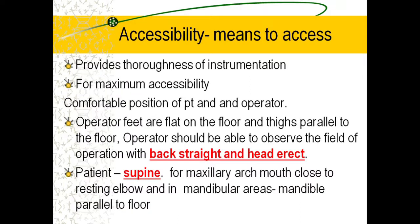First, accessibility means to access the area. It provides thoroughness of instrumentation. For maximum accessibility, a comfortable position of both patient and operator should be maintained. Operator feet should be flat on the floor, thighs parallel to the floor, and the operator should be able to observe the field of operation with back straight and head erect. Patient position should be supine for the maxillary arch, mouth close to the resting elbow, and in the mandibular area, the mandible should be parallel to the floor.